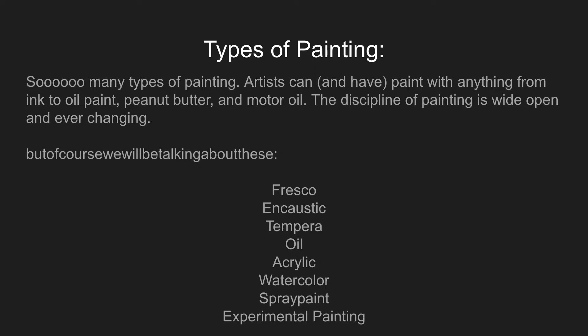Types of painting — there are so many types. Artists can paint with anything from ink, as in the washes we talked about last week, to oil paint, or even peanut butter and motor oil. The discipline of painting is wide open and ever changing. We will be talking about the traditional and common types: fresco, encaustic, tempera, oil, acrylic, watercolor, spray paint, and experimental painting.